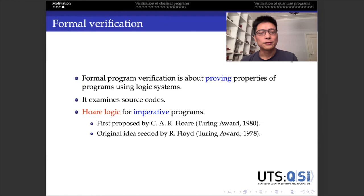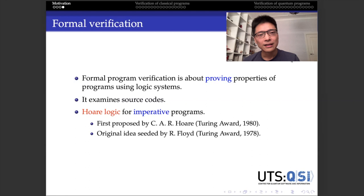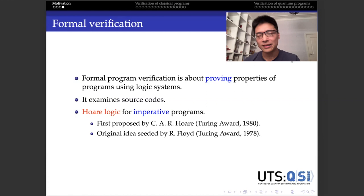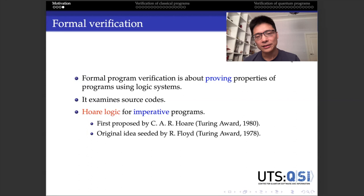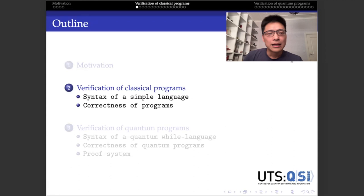To deal with this problem, another approach is to do formal verification — in particular using the so-called Hoare logic. Once a program is proved correct in this system, you can guarantee there are no bugs. Another advantage is that this approach is based on the source code, so you can find bugs in the early stage of development. This line of approach was proposed by Turing Award winner Tony Hoare, and the original idea came from another Turing Award winner Floyd.